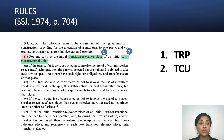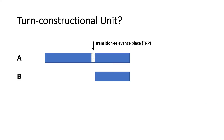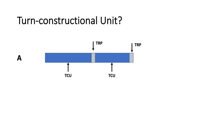Now let's return to Rule 1. Rule 1 also mentions Turn Constructional Unit, or TCU in short. I believe that the understanding of this term will come naturally once we understand TRP. Remember, the concept behind both TRP and TCU is that there is a space, place, or time in a conversation where a turn may end. The simplest explanation for TCU would be any unit where at the end of it a TRP occurs. So a TCU is that simple — any unit at the end of which is a TRP.